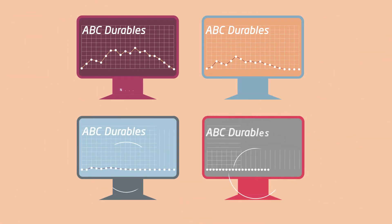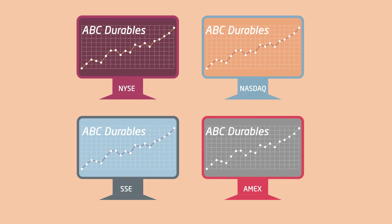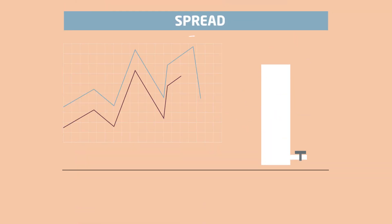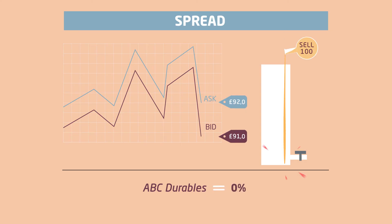Because it performs consistently, its shares are sold and bought all the time. Because its shares are highly liquid, the spread on ABC Durables is much smaller than Lab's. It's just 0.5%.